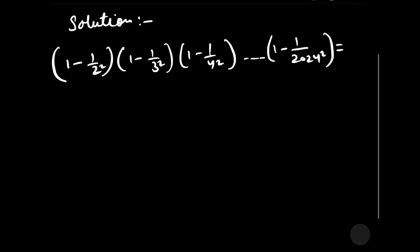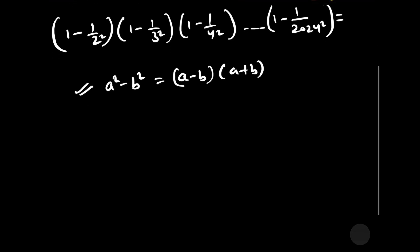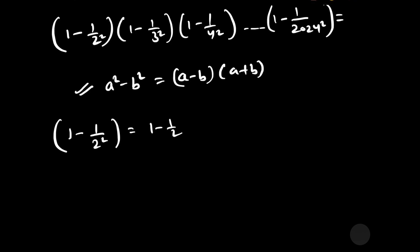To solve it, we should know the identity a squared minus b squared, which can be written as (a minus b) into (a plus b). This question seems to be very tough but actually it is a very simple problem based on this identity. We can write 1 minus 1 by 2 squared as (1 minus 1 by 2) into (1 plus 1 by 2), using the identity a squared minus b squared equals (a minus b)(a plus b).